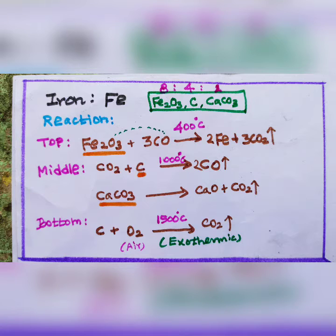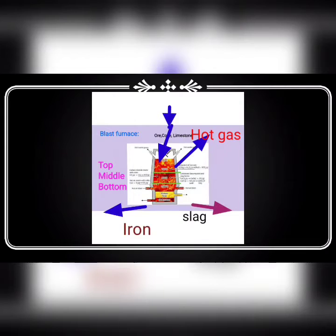In the middle stage, at 1000 degrees Celsius, carbon dioxide react with coke, we get carbon monoxide. Calcium carbonate, when it is heated, it decomposes into calcium oxide and carbon dioxide.